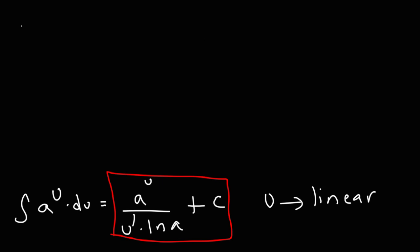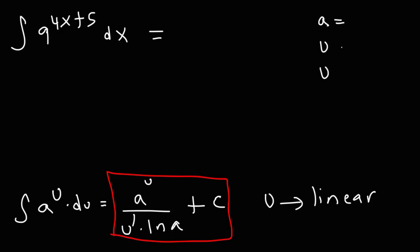Let's find the indefinite integral of 9 raised to the 4x plus 5. So what's a, what's u, and what's u prime? a is the base, that's 9. u is the exponent, 4x plus 5. u prime, the derivative of 4x plus 5, is just 4.